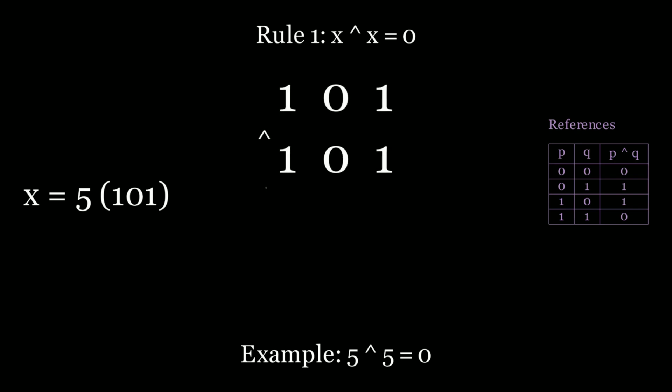Now with that being said let's look at the first rule that we're going to need to solve this problem. The rule is X XOR X, so a number XOR by itself is equal to 0. Let's take a look at an example, 5. 5 in binary is 1 0 1. So what happens if we XOR 1 0 1 XOR 1 0 1?